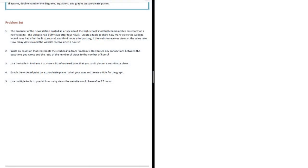6th grade module 1 lesson 15 problem set number one. The producer of the news station posted an article about the high school's football championship ceremony on the new website. The website had 500 views after four hours. Create a table to show how many views the website would have had after their first, second, and third hours of posting. If the website receives views at the same rate, how many views would the website receive after five hours? Okay, so this is number one and we need to create a chart that shows the views after hours.